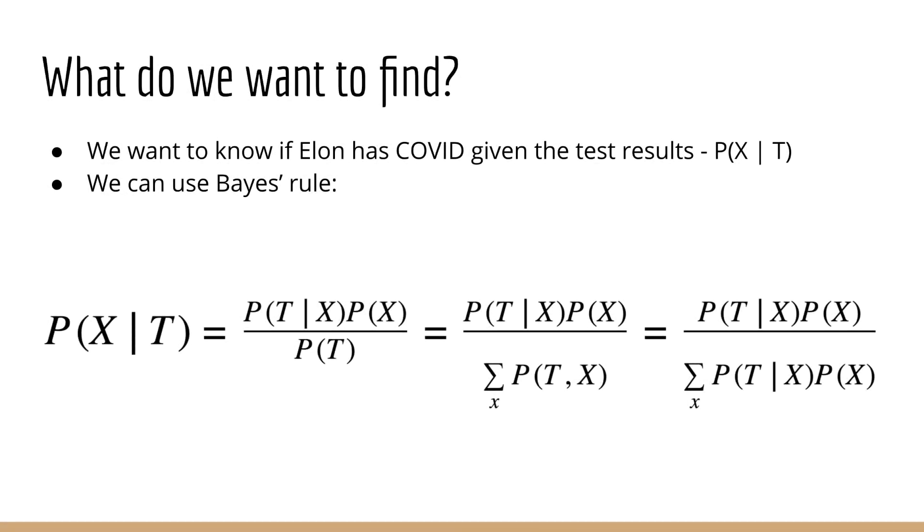So, those are the givens. Now, what do we actually want to find? Well, we want to know whether or not Elon Musk has COVID, given the test result. Using our notation, this is p of x given t. Okay, so I hope you can see how Bayes' rule comes into play.